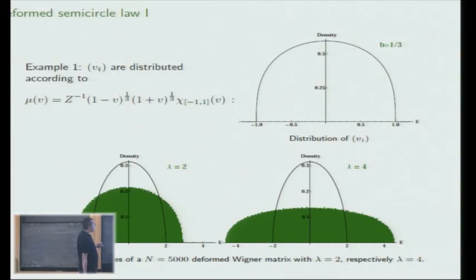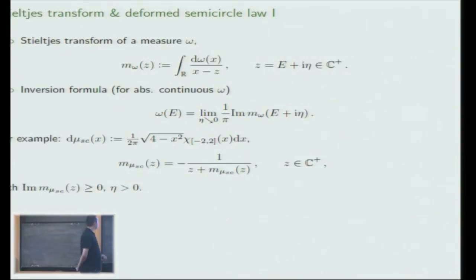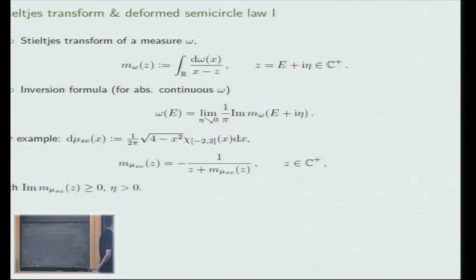To define the deformed semicircle distribution, I want to use the Stieltjes or Cauchy transform of probability measures. If omega is a probability measure, then I define its Stieltjes transform M_omega(z) by this formula, where z is a complex number in the upper half plane so that the right-hand side defines an analytic function of z. From the Stieltjes transform I can recover the measure omega—at least if it's absolutely continuous—by the inversion formula, looking at the imaginary part of the Stieltjes transform and taking eta, the imaginary part of z, to 0.